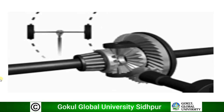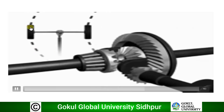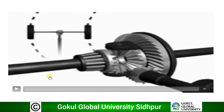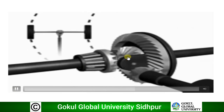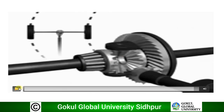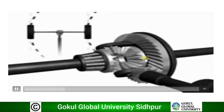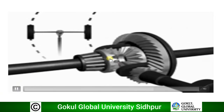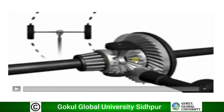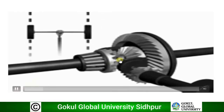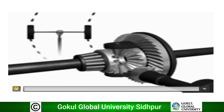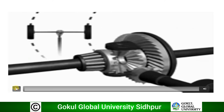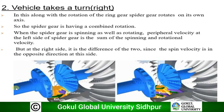In the animation, the vehicle is taking a right turn. The spider gear is both rotating and spinning on its own axis. The RPM on the left side is higher compared to the RPM on the right side — the left side gear is rotating at high speed compared to the right side gear. This is how the differential plays its vital role while taking a right turn.